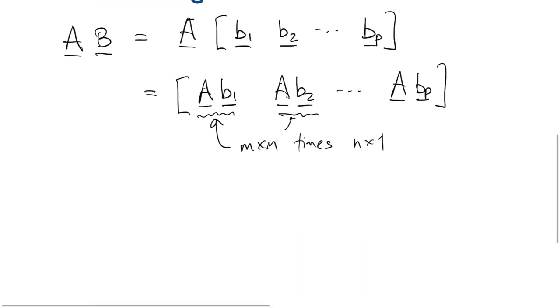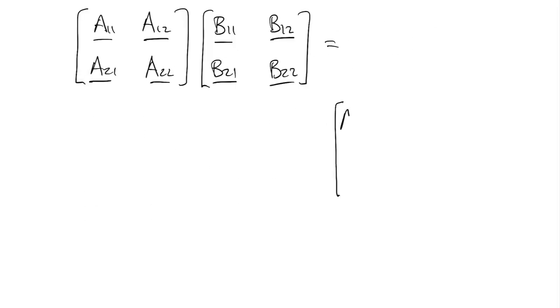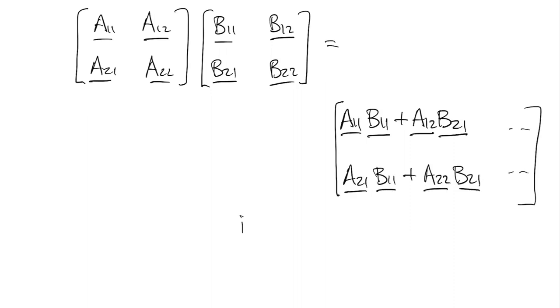As another example, we could write two matrices in two by two block form, and then when we multiply them, the blocks multiply just as though they were scalars. So as long as the sizes are correct and you keep things in order because of the non-commutativity, this will work.